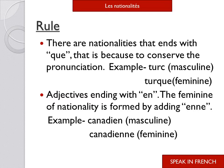Rule number three: there are nationalities that end in 'k' — to conserve the pronunciation, we add 'que' to change to the feminine form. The pronunciation will be the same. For example: turc — it is a masculine nationality. To convert it into feminine, we add 'que': turque. The pronunciation remains the same.